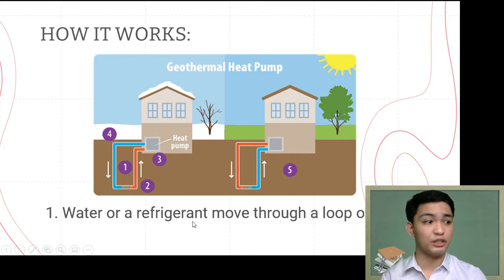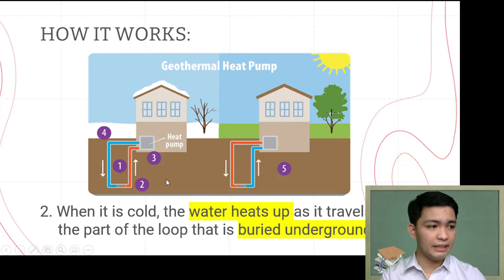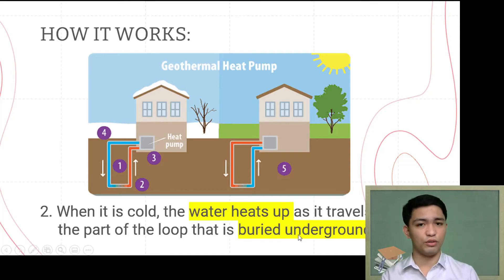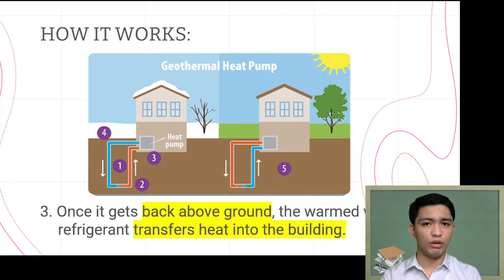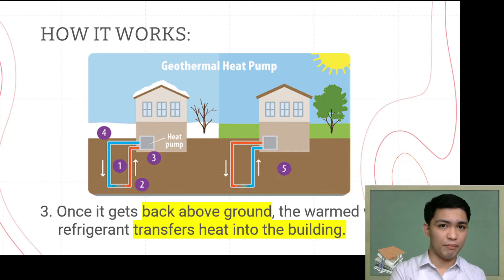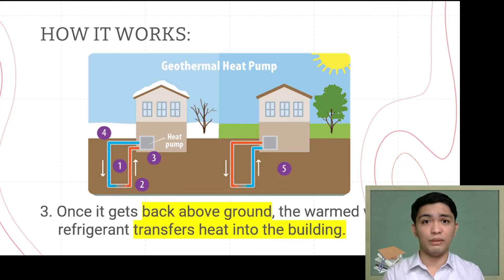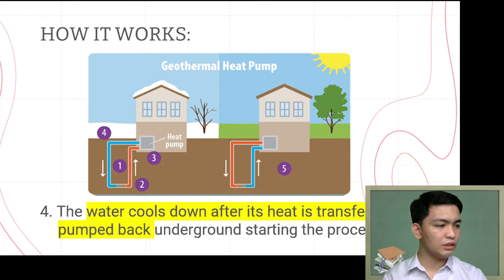During winter, when it is cold above ground, the water heats up as it travels through the part of the loop underground. Once it gets back above ground, the warmed water or refrigerant transfers heat into the building. Since heat moves from areas of high temperature to areas of lower temperature, the heat transfers from the warm refrigerant into the cooler interior of the building.